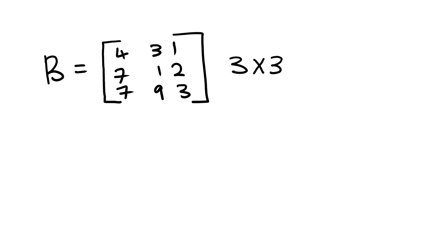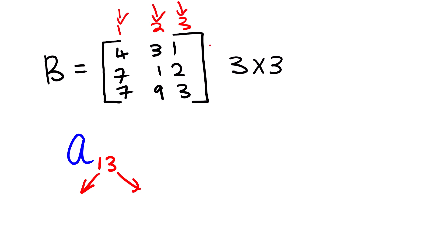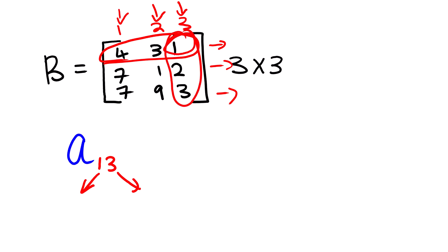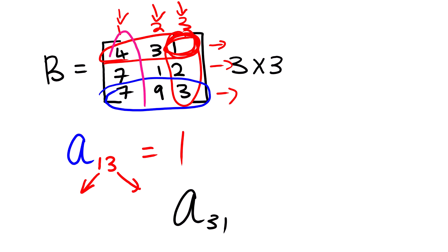If you are looking for element a13, we go to row number one and column number three. Counting across: column one, two, three — and row one — gives us that specific number, which equals one. For element a31, that is row number three and column number one, which gives us the number seven.